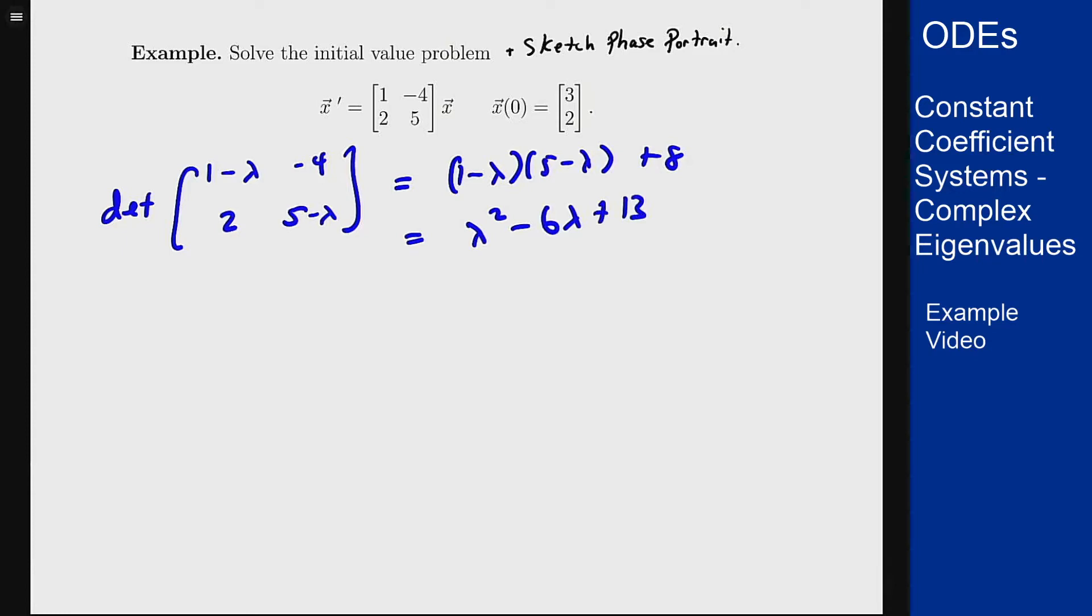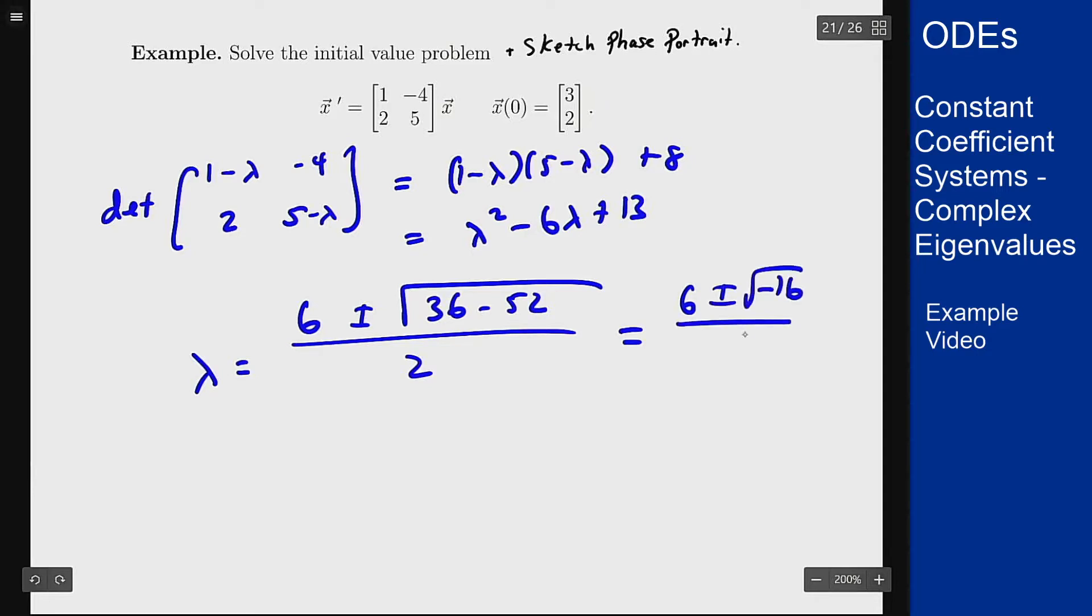That doesn't factor so let's use the quadratic formula to find the eigenvalues. We would get that λ is (6 ± √(36 - 52))/2 which is (6 ± √(-16))/2 which is 3 ± 2i.